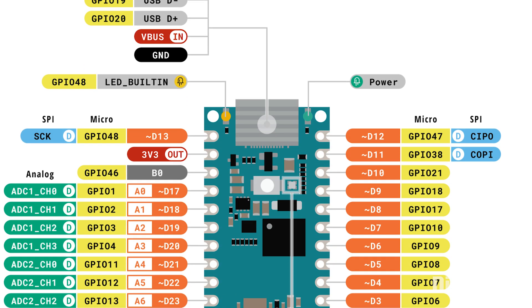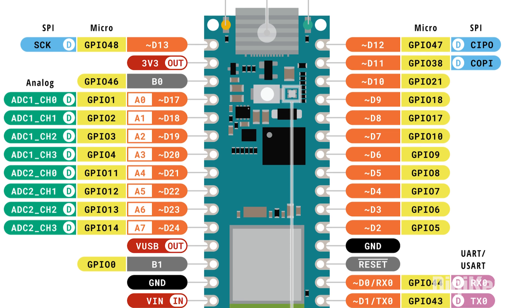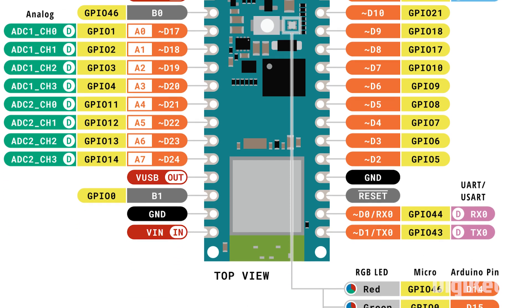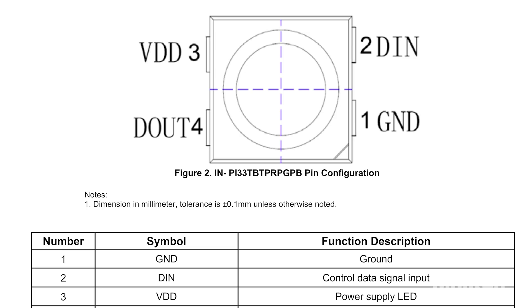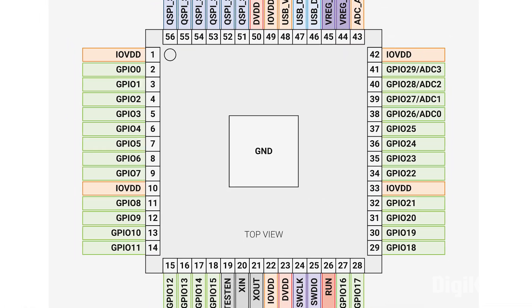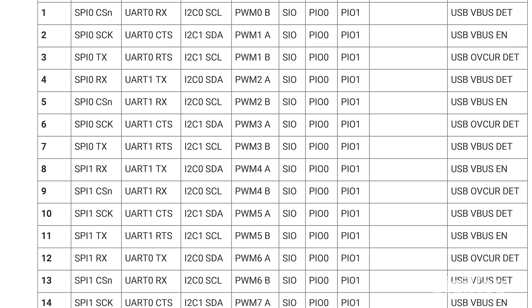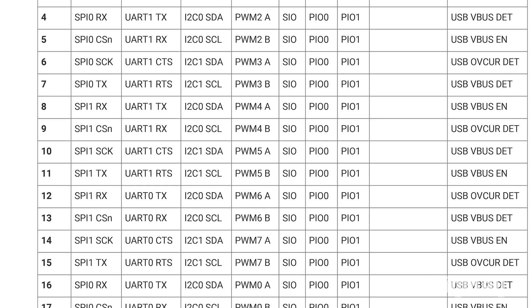Another key section is called the pin configuration, sometimes called the pinout diagram. This is where you will find a labeled map of what each pin on your component does — it's essential for wiring up things correctly. For simple components like an LED it's pretty straightforward, but for ICs with dozens of pins, the diagram helps you decode which ones are for power, ground, inputs, outputs, communication lines, and more. You'll often see both a visual layout and a table listing each pin with its name, number, and function. When I'm breadboarding or laying out a PCB, this is the page I'm constantly referencing.